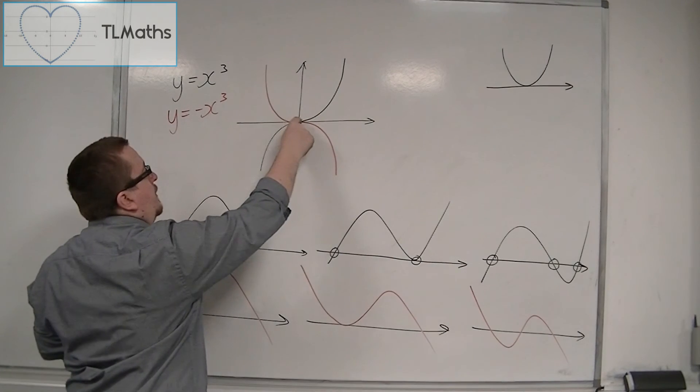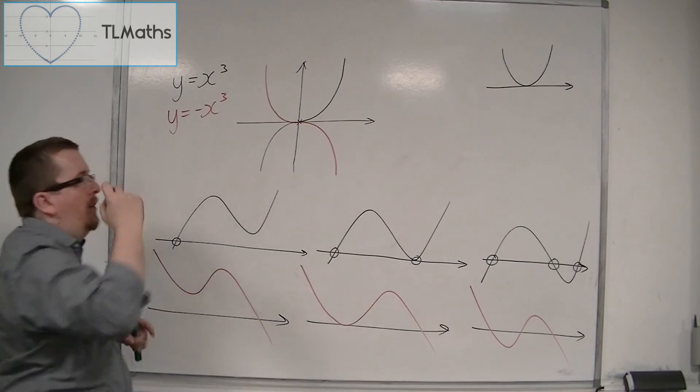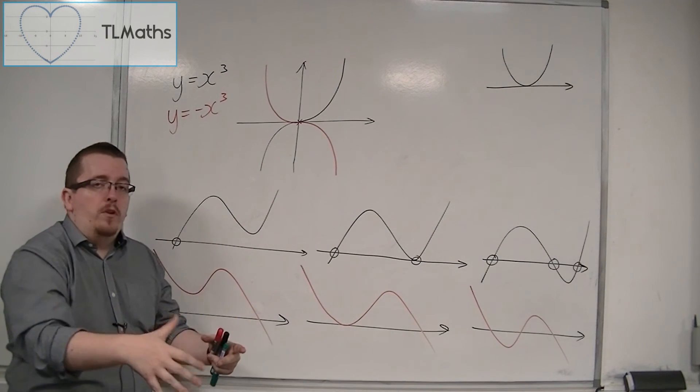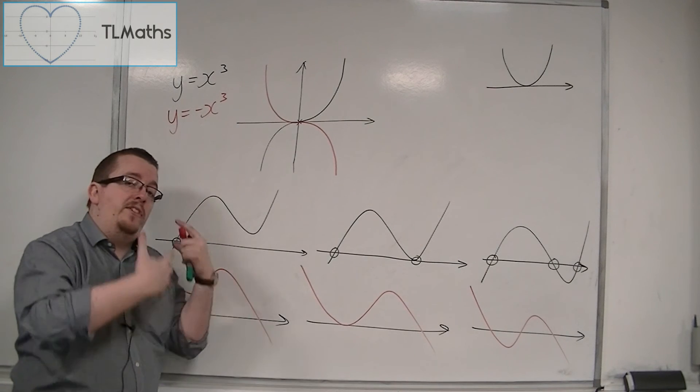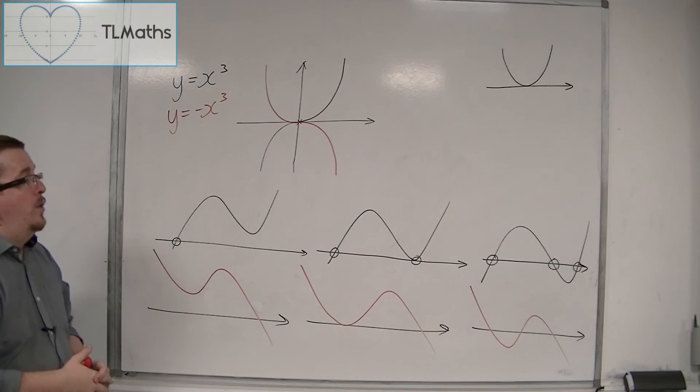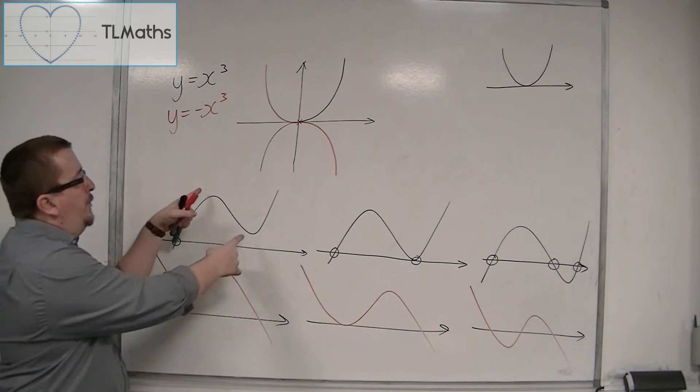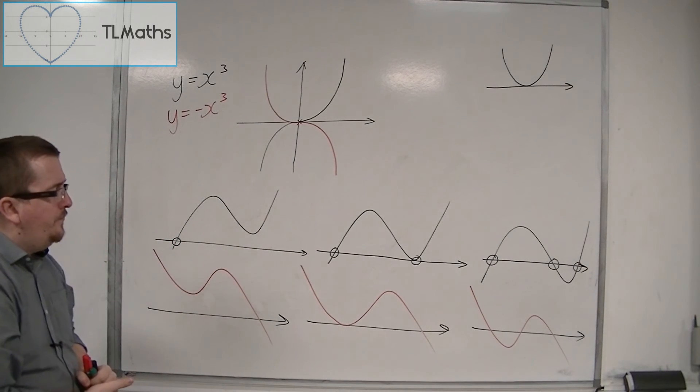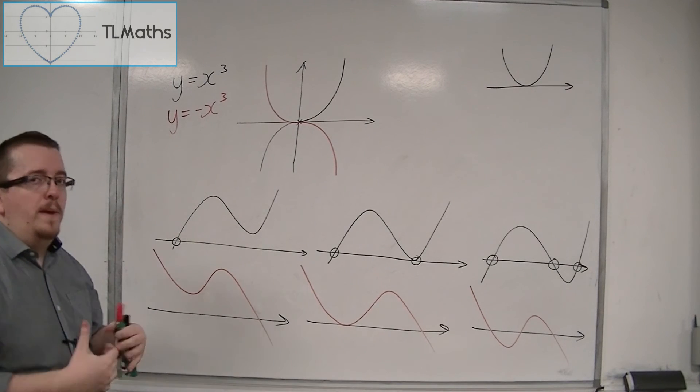So you can see that there's these two humps, effectively, but only kind of one here. As we'll see later on in the course, we would refer to that as a stationary point or an inflection point in this case. We've got two stationary points, a maximum and a minimum, in each of these. So this is what cubics look like.